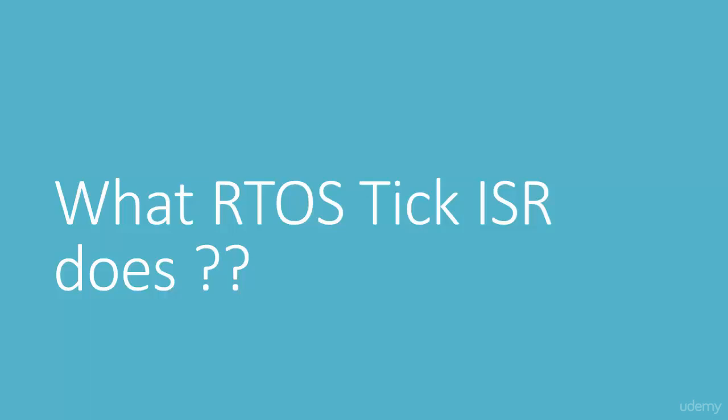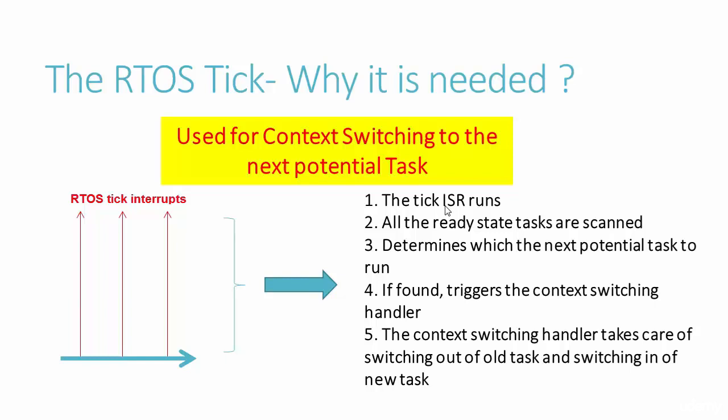Let's see what the tick ISR does. As explained, the tick ISR runs whenever the kernel tick interrupt happens. When the ISR runs, it will determine which is the next potential task to run on the CPU — it will scan all the ready state tasks and find out which has the highest priority compared to the currently running task.